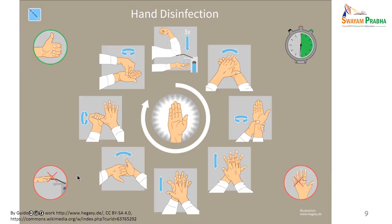This brings me to how proper hand disinfection should be done. When you do hand disinfection, you wash your hands with soap and water. Start by opening the tap and putting your hands under running water. Then take some soap, rub the palms together. The next step involves washing down to the wrists.